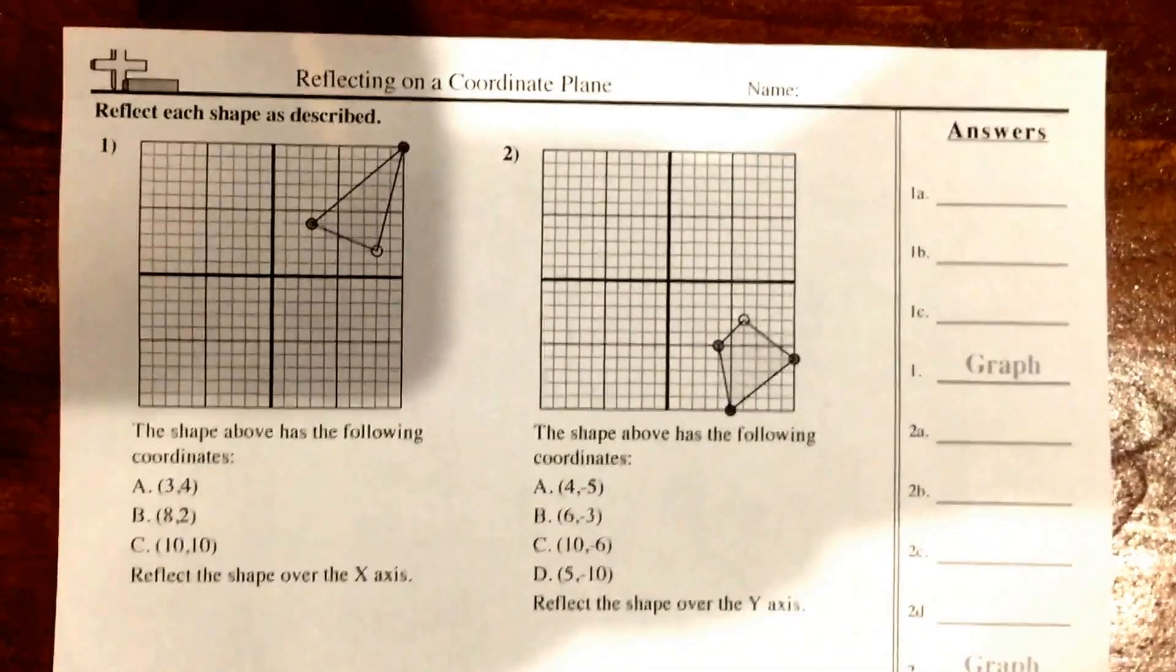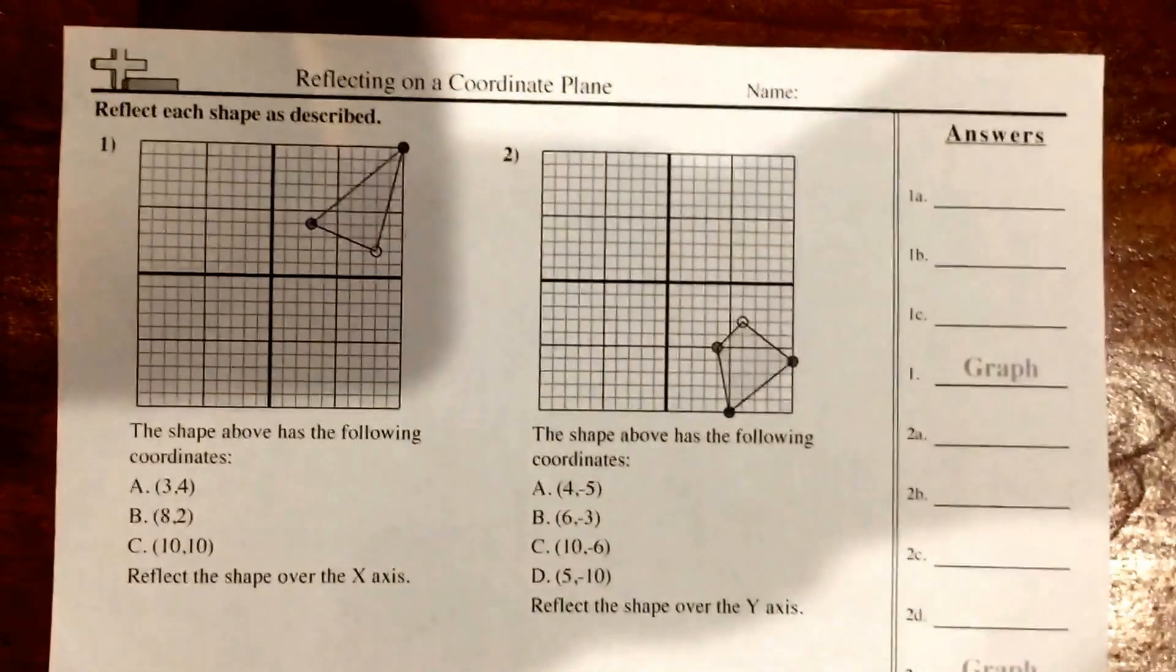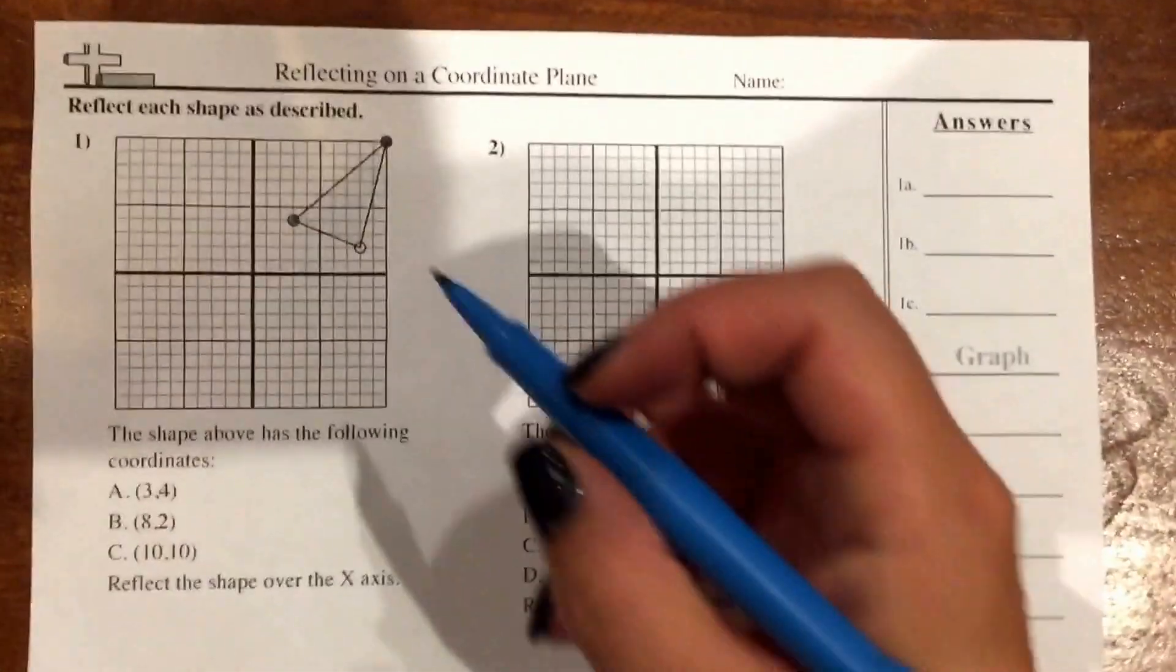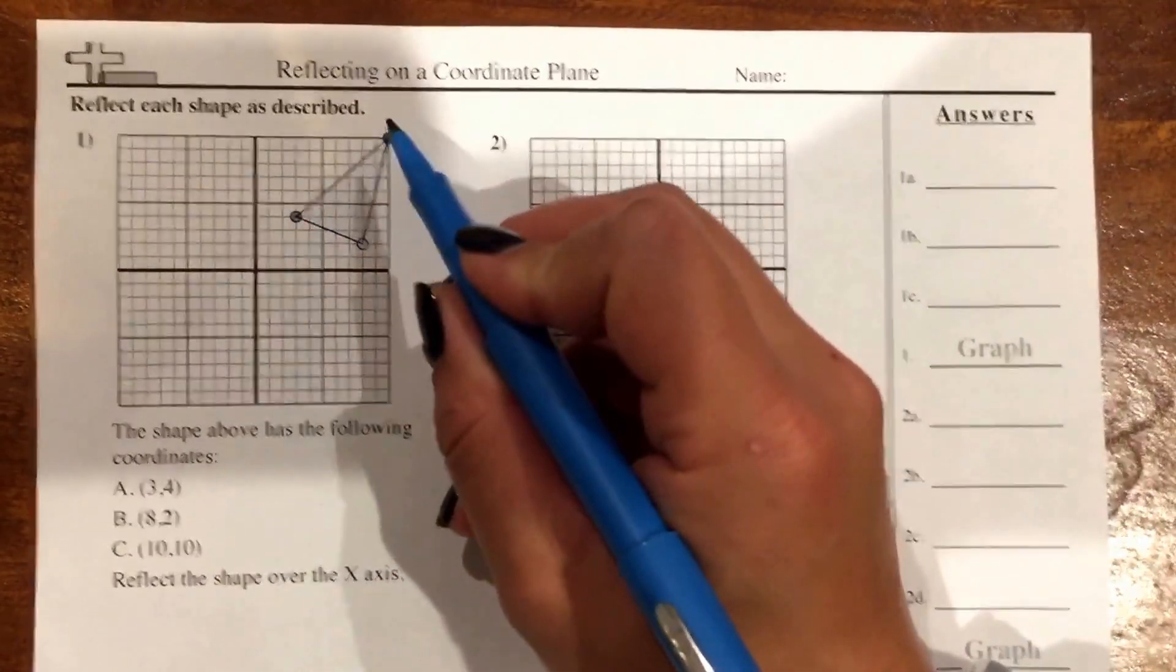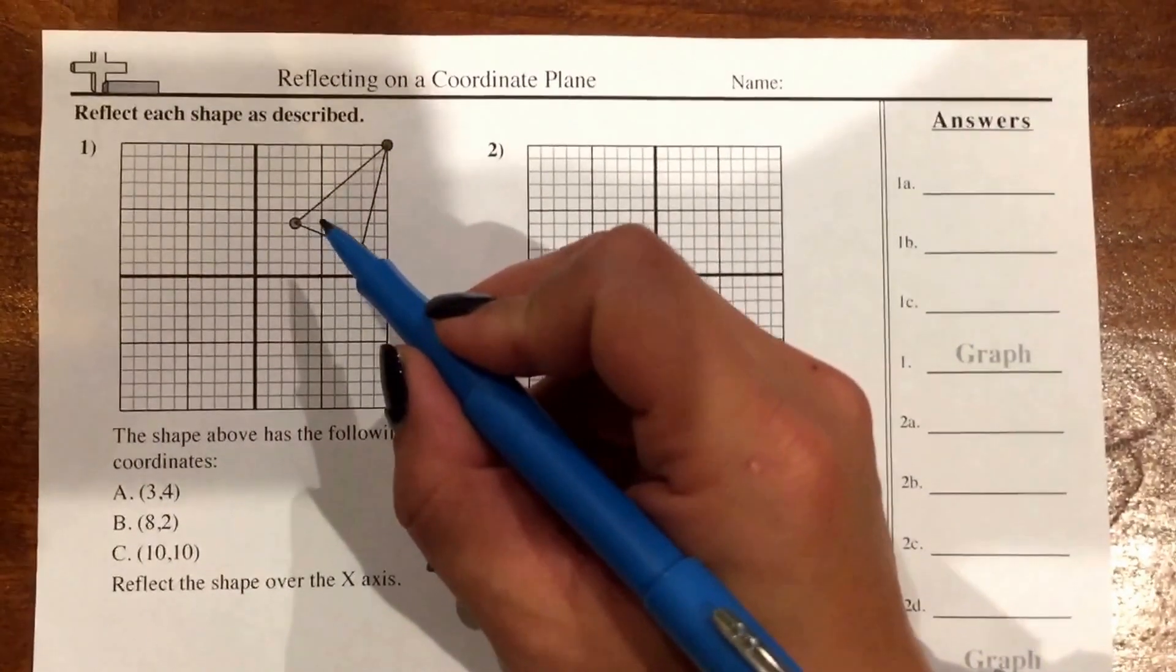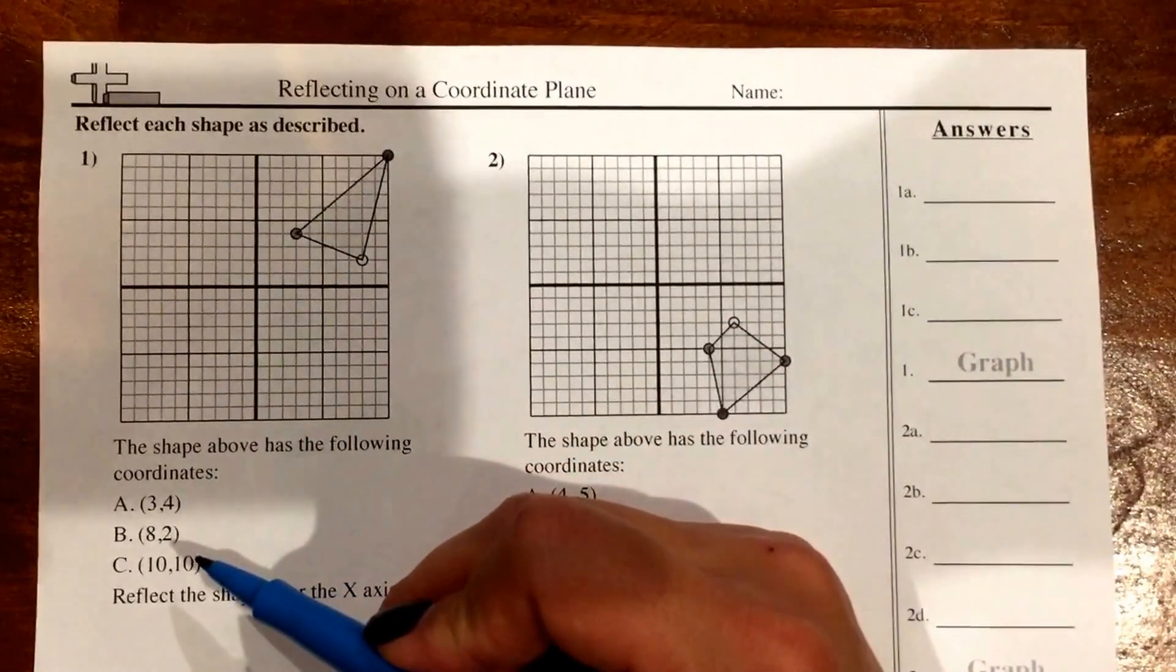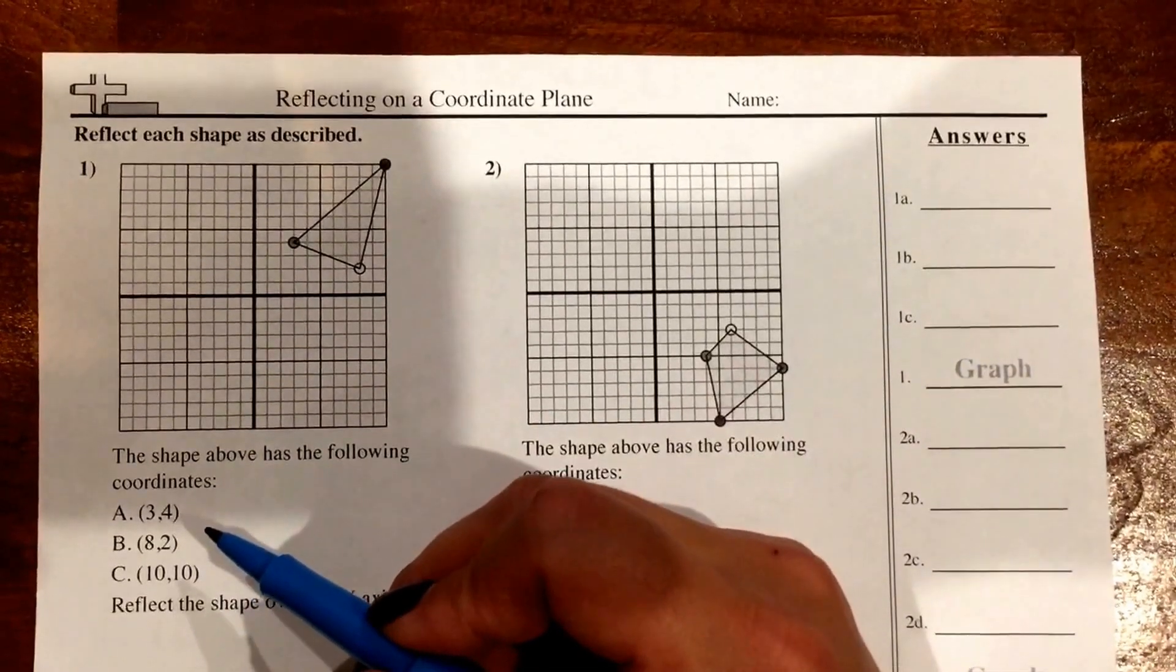So in this lesson, I'm going to show you how to reflect points over an axis on the coordinate plane. If you look at number 1 over here, there's a triangle that's graphed in quadrant 1. And if you look down here for points A, B, and C, it gives you the coordinates of that triangle.